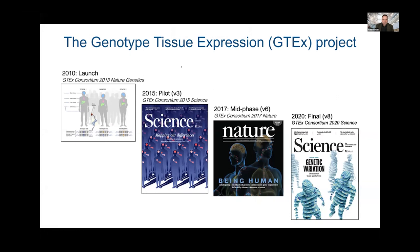I'm going to talk about the Genotype Tissue Expression Project — a project related to diversity across individuals. It was launched in 2010, predating the Human Cell Atlas projects. We had a pilot paper in 2015, a mid-phase paper in 2017, and a final consortium paper in 2020. We have actually had another release including all 960 genotype donors, with another release coming in the spring with residual RNA and other data types.